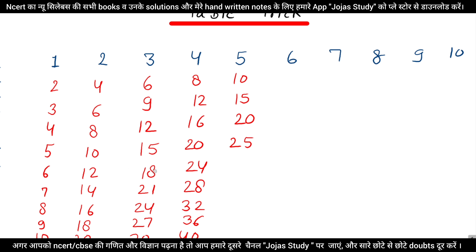26, 27, 28, 29, 30, 31, 32, 33, 34, 35, 36, 37, 38, 39, 40, 41, 42, 43, 44, 45, 46, 47, 48, 49, 50. Okay, this is our 5 table.